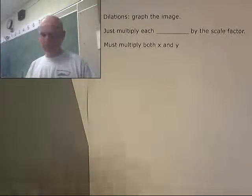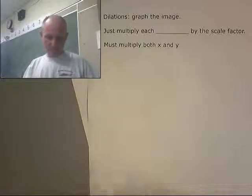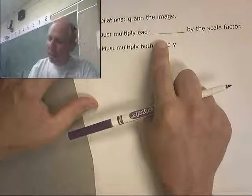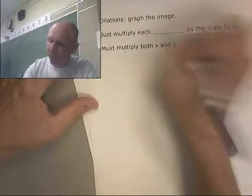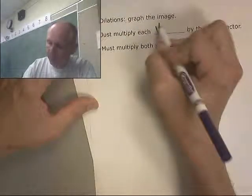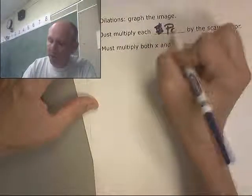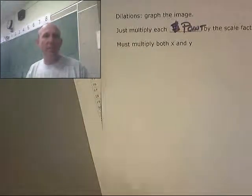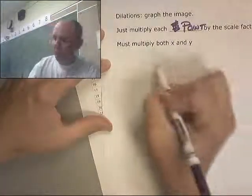So it's really basic to do on a piece of graph paper. I'll bring some graph paper in a second. Just multiply each point by the scale factor. You just multiply the x and the y.